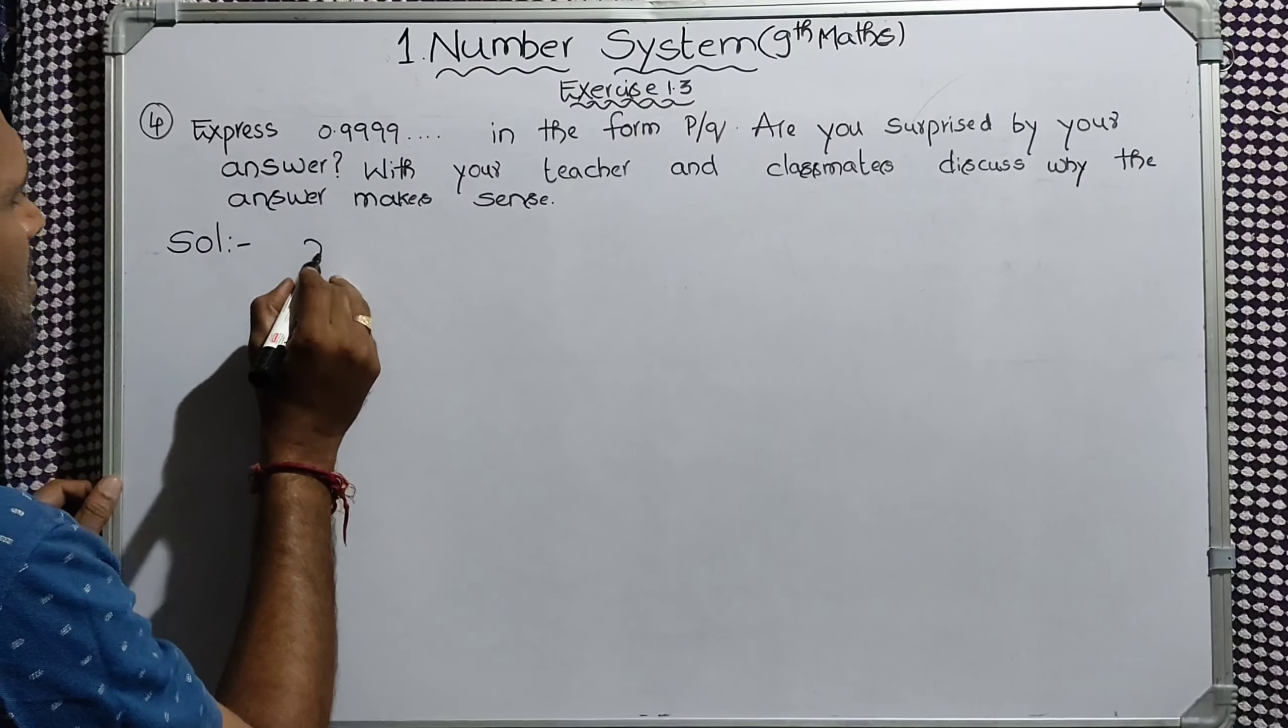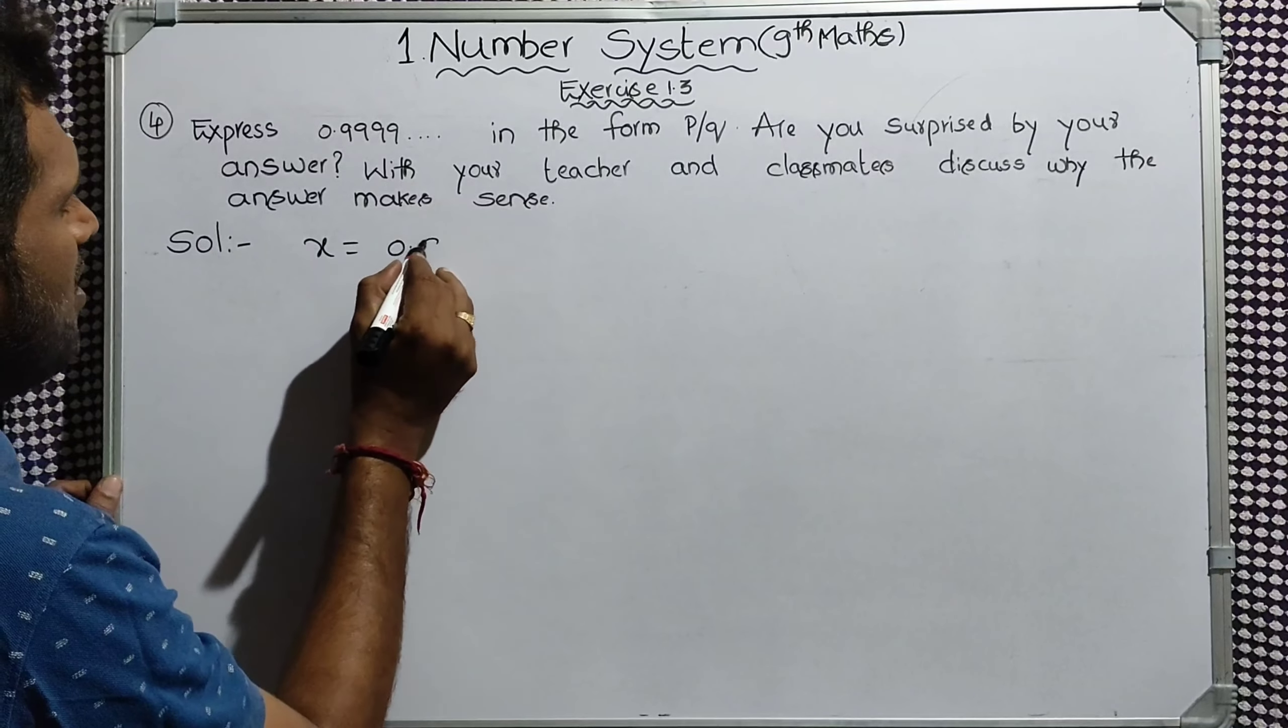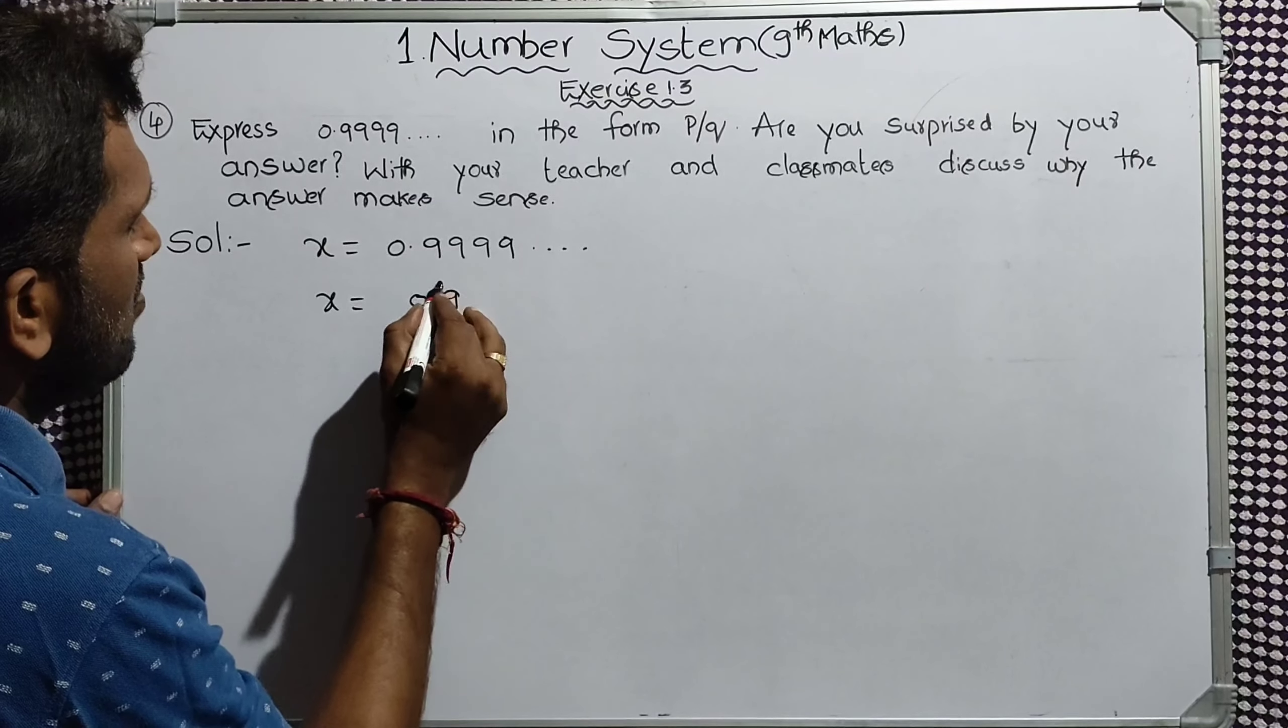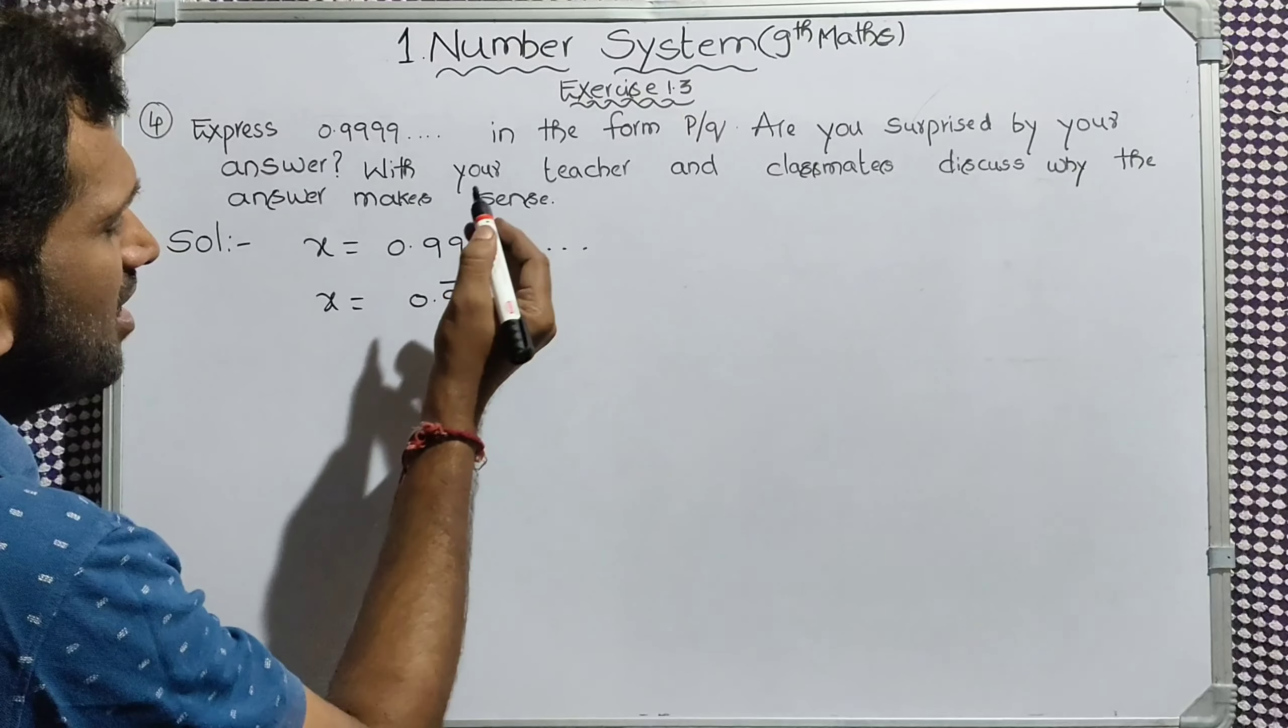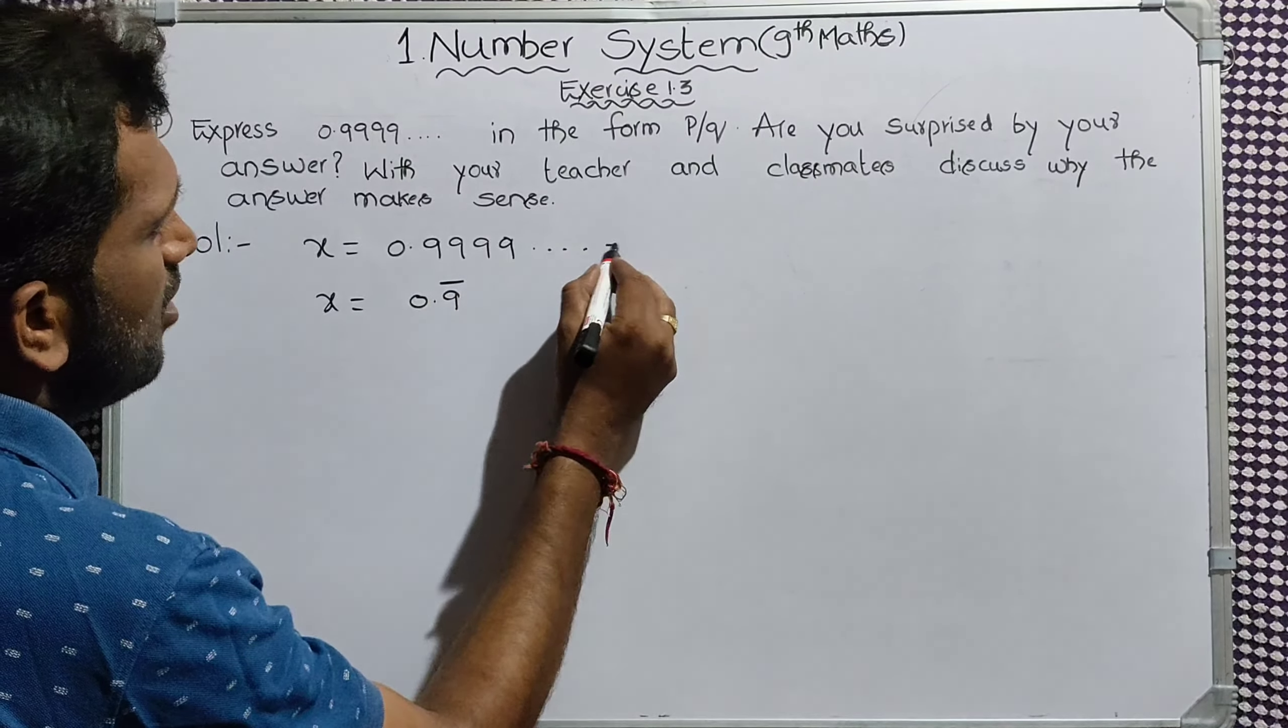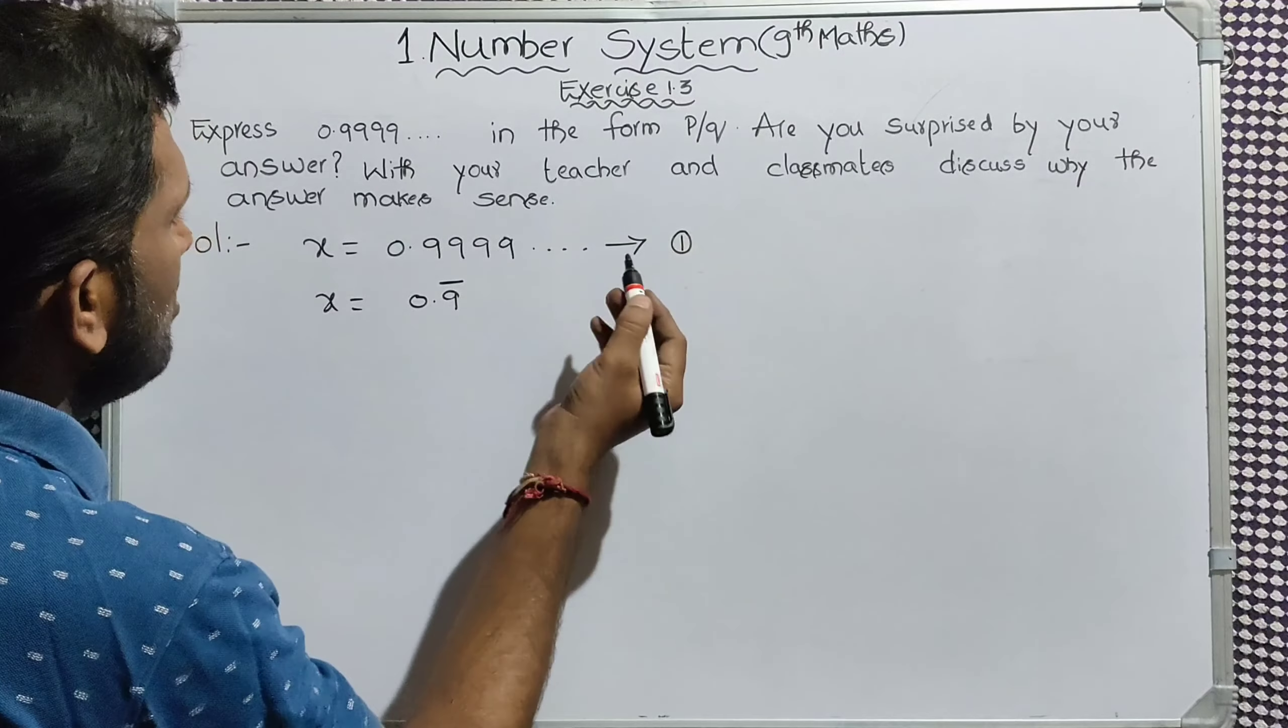Solution: x equal to 0.9999 and so on. x equal to 0.9 bar. This is equation 1.